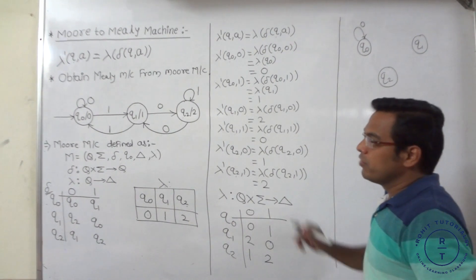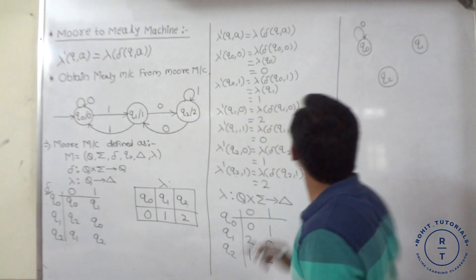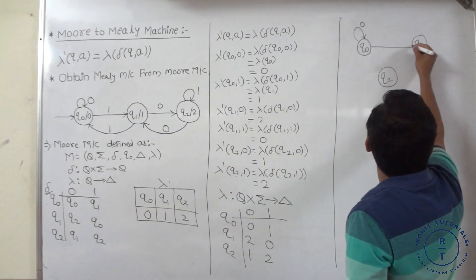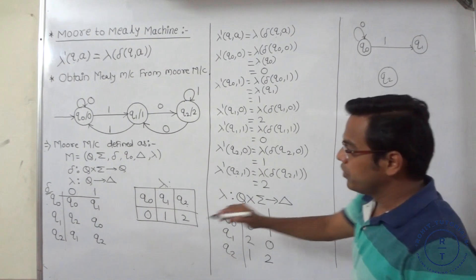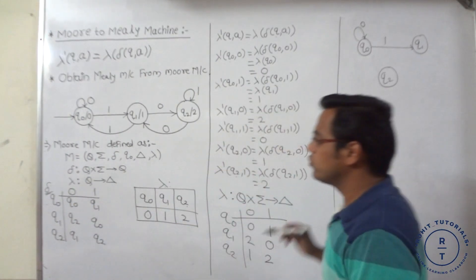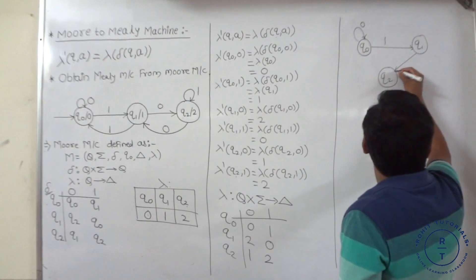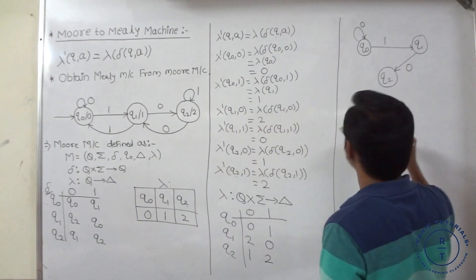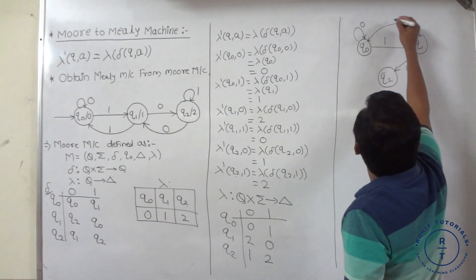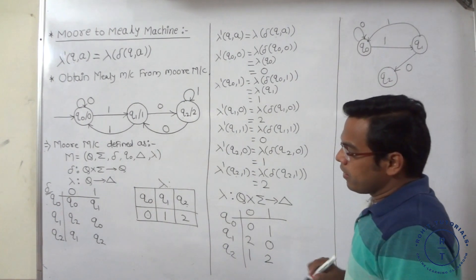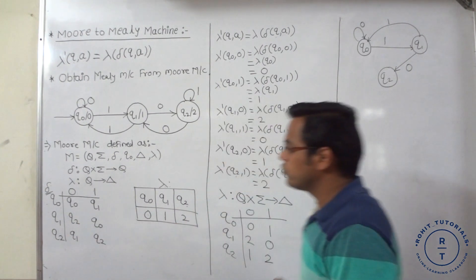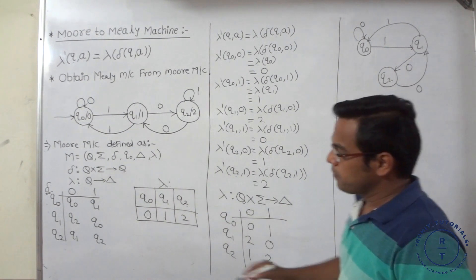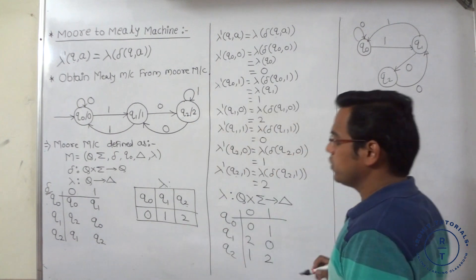Continuing the transitions: q1 with input 0 → goes to q2; q1 with input 1 → goes to q0; q2 with input 0 → goes to q1; q2 with input 1 → self-loop at q2. In the Mealy machine, the output is always represented with the input — output is shown on the transition as input slash output.